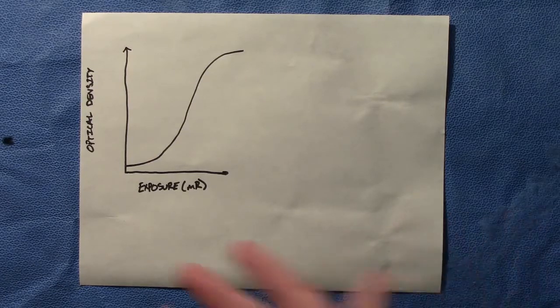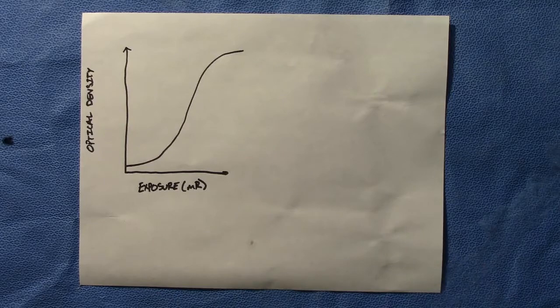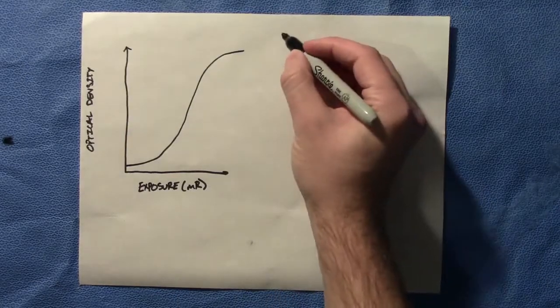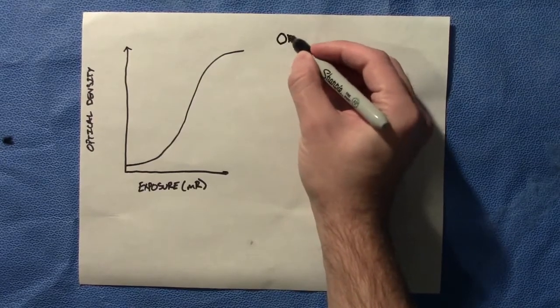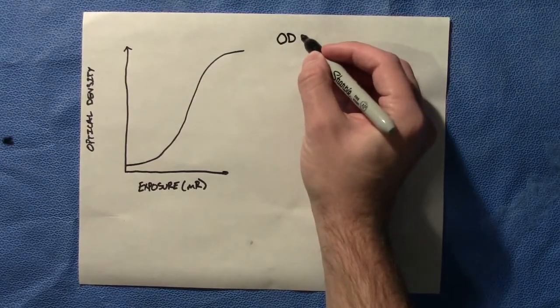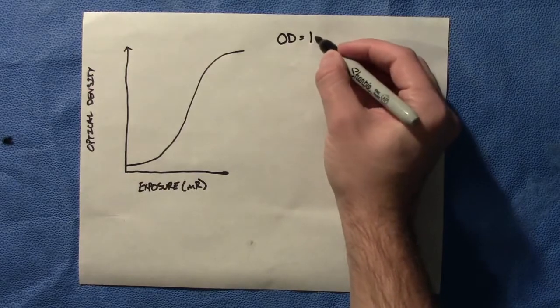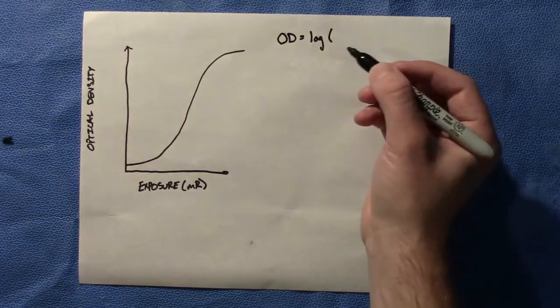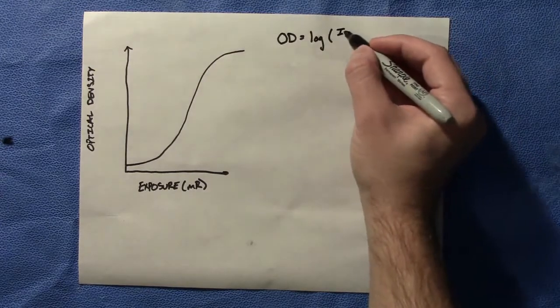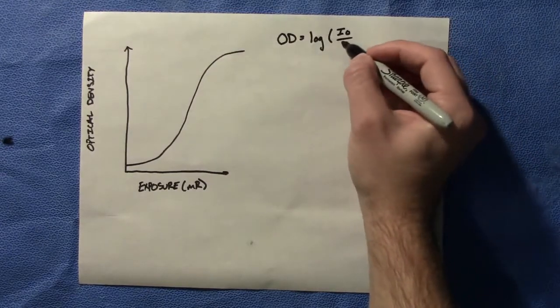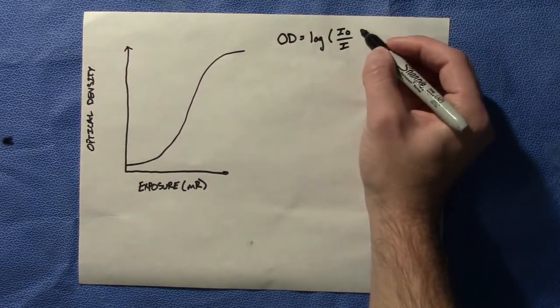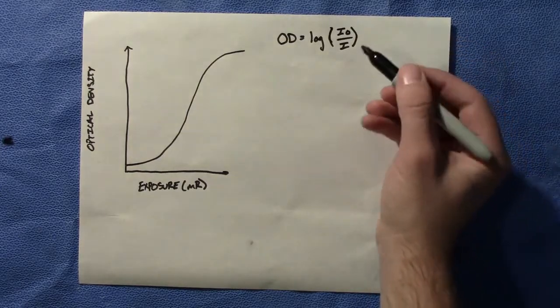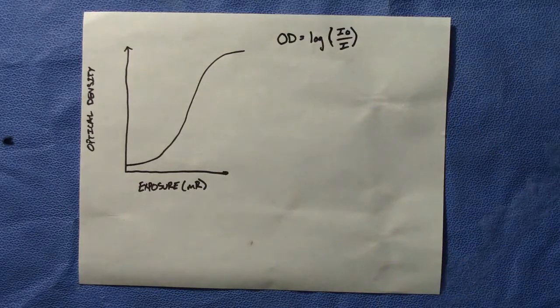It simply plots optical density against the log of exposure. If you have to define optical density for part 2 or any written exam, you need to know that optical density is simply the log of the initial amount of intensity and transmitted light over that transmitted through the film.